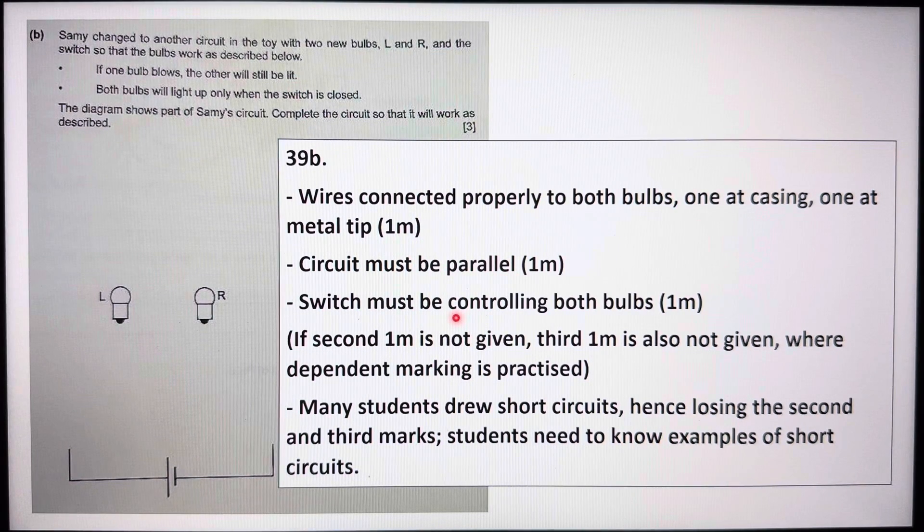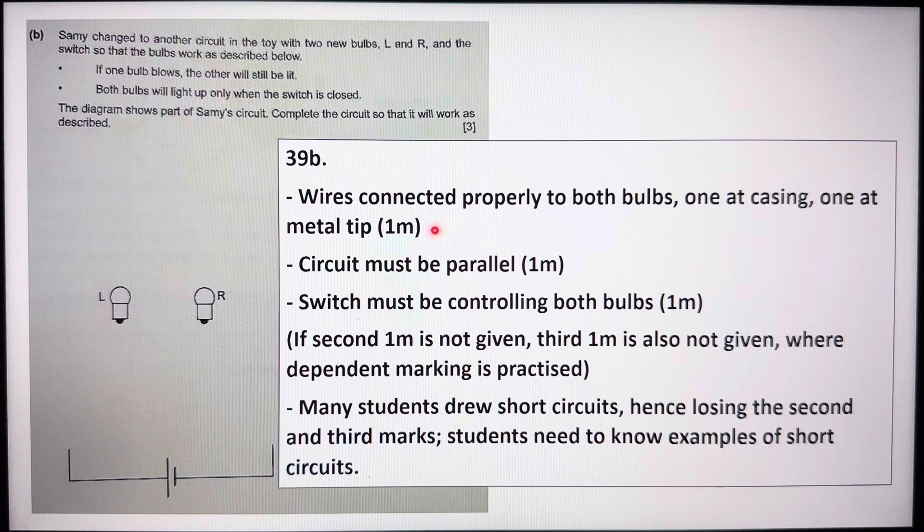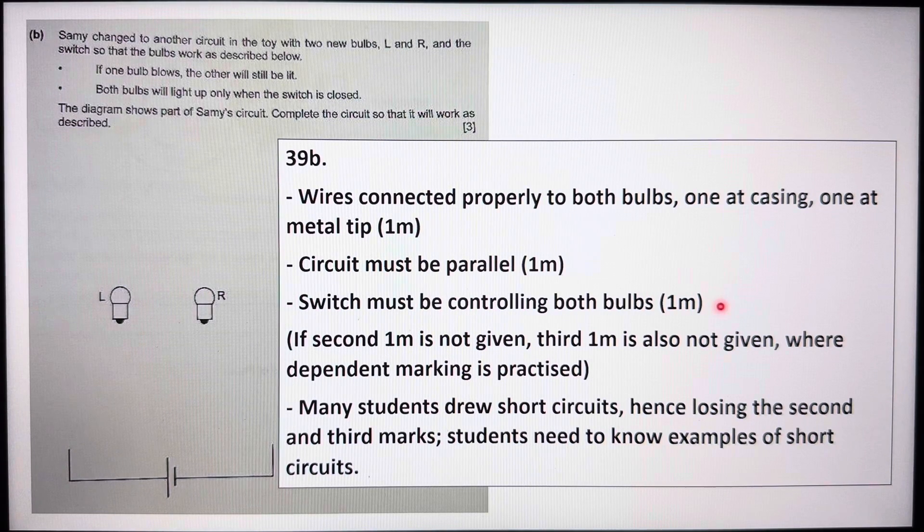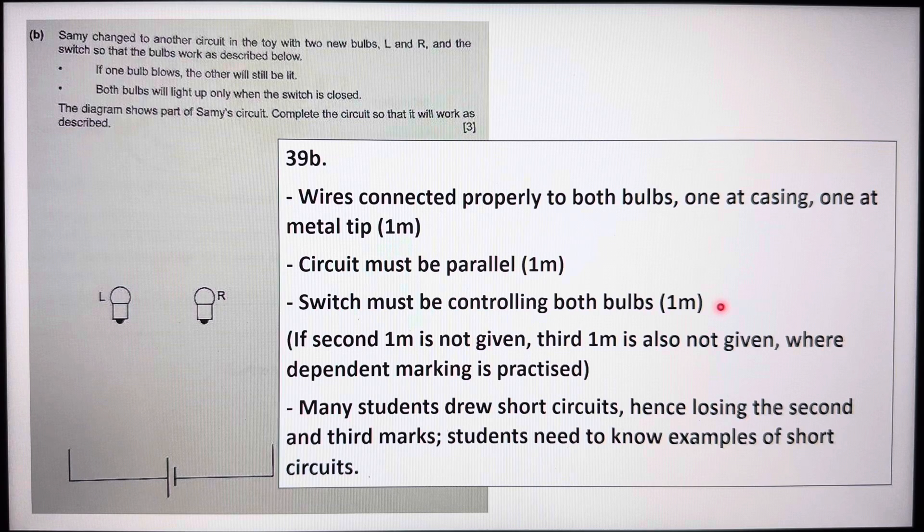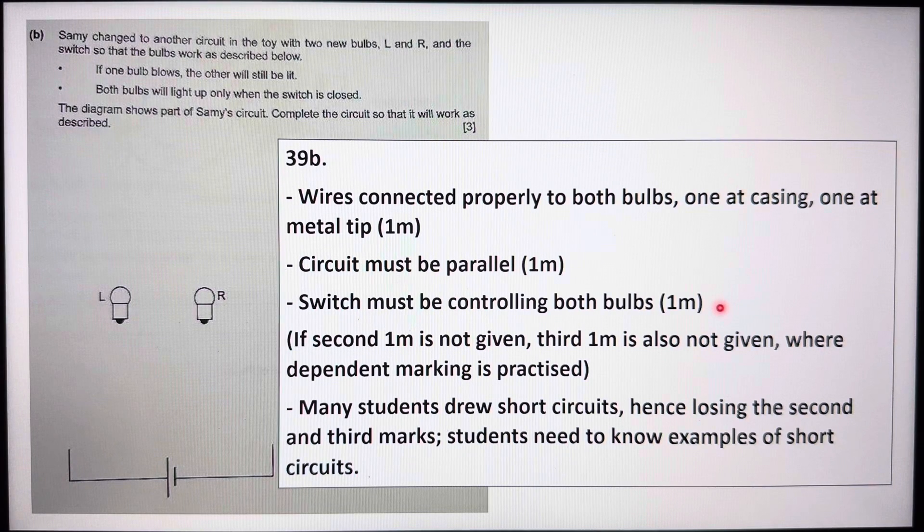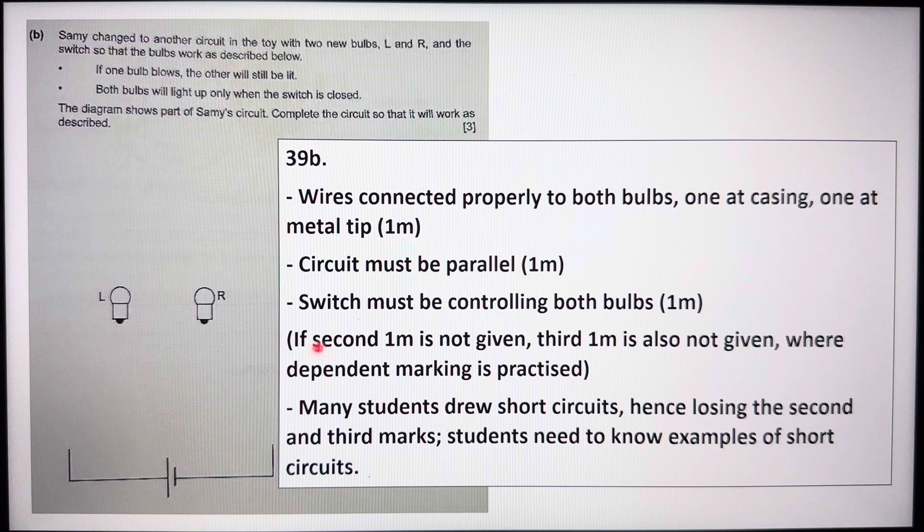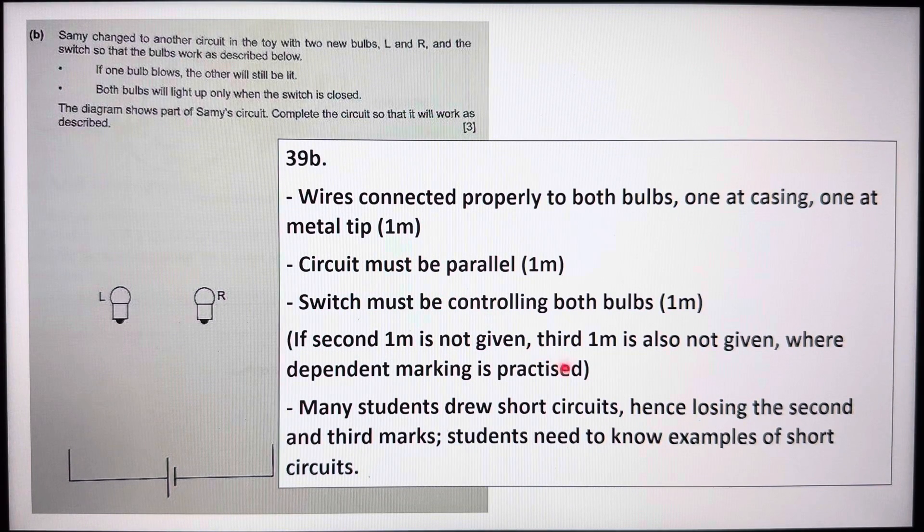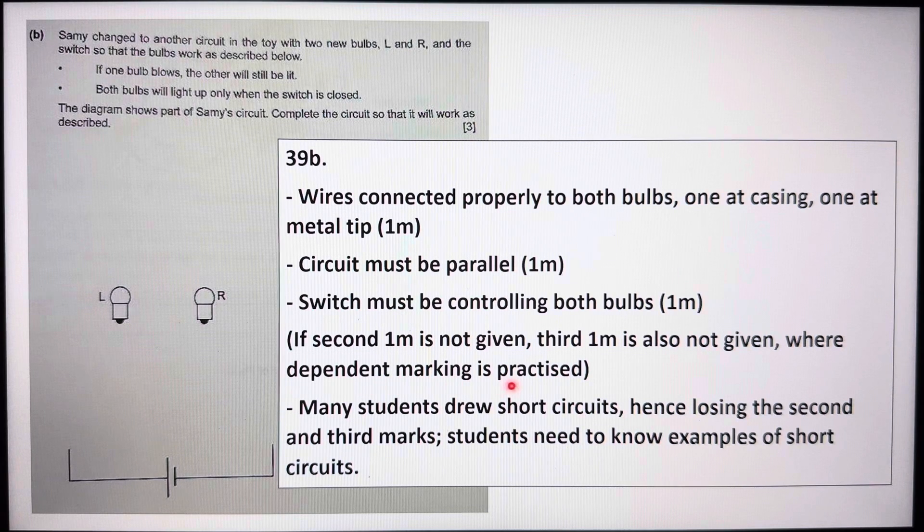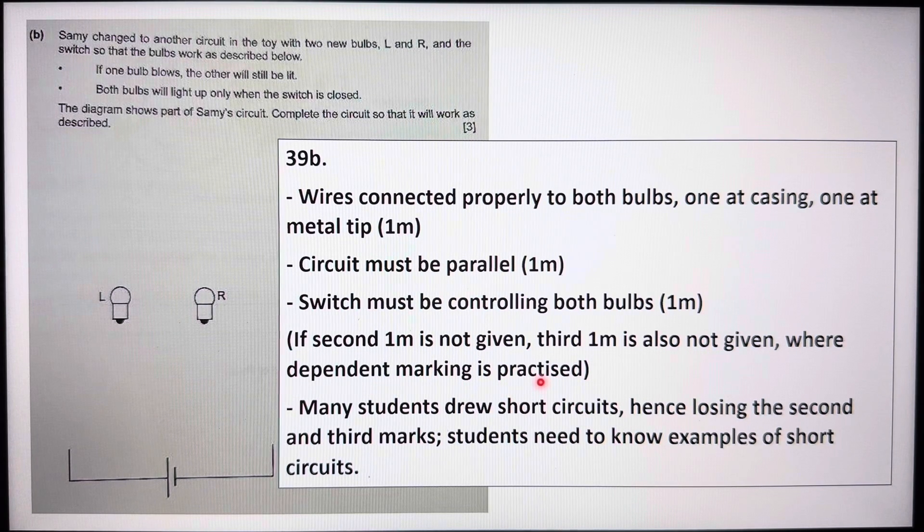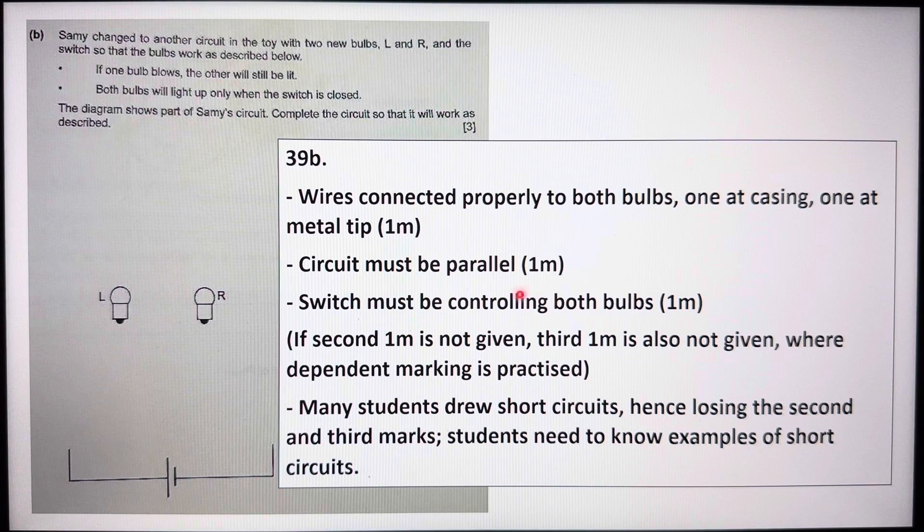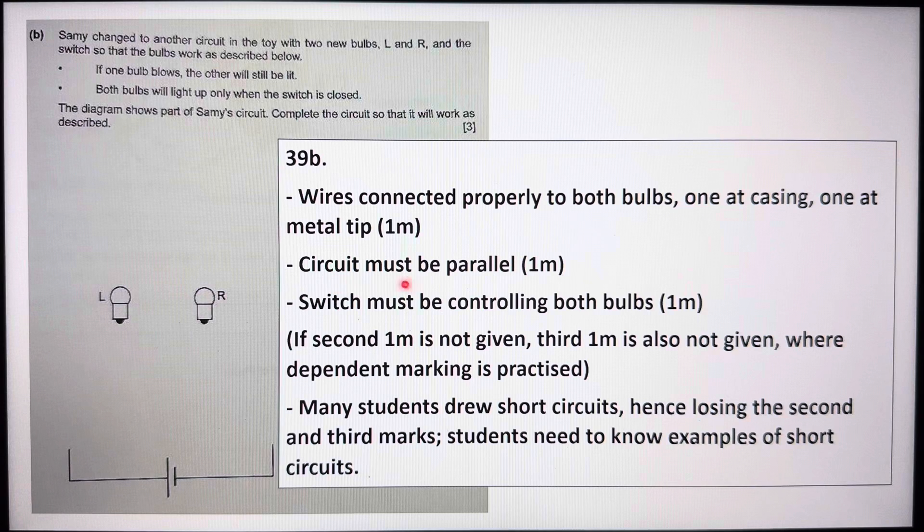The third one mark, the switch must be controlling both bulbs. So one mark here, one mark here and one mark here for the circuit diagram, drawing of the circuit drawing. Now if the second one mark is not given, the third one mark is also not given where dependent marking is practiced here. So to get this one mark where the switch is controlling both bulbs, you need to draw the circuit in parallel first.